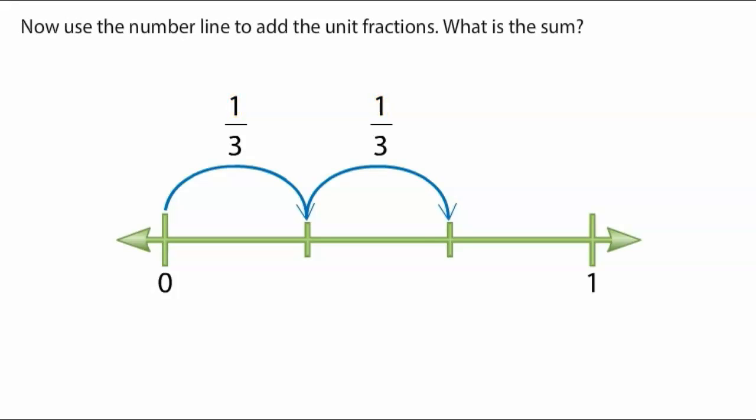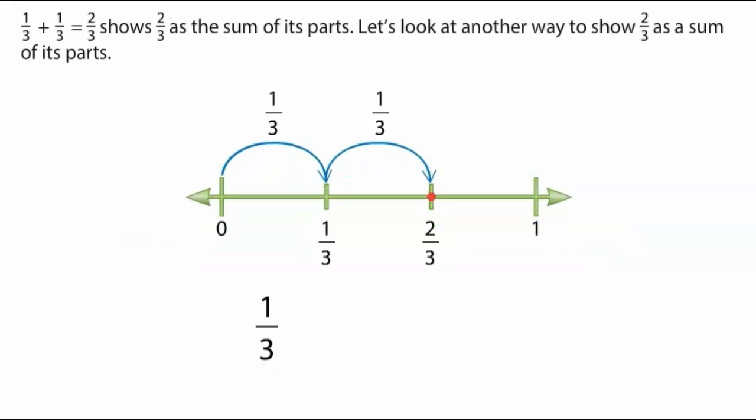Now use the number line to add the unit fractions. What is the sum? One-third plus one-third equals two-thirds shows two-thirds as the sum of its parts.